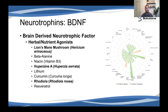Our major players when it comes to BDNF are lion's mane mushroom (Hericium erinaceus) — with a lot of research going on regarding its nootropic and neurological effects — huperzine A from the herb Huperzia serrata, and rhodiola. On the right, there is a whole host of other agonists and antagonists being researched, and you would want to pay attention to the agonists for BDNF.